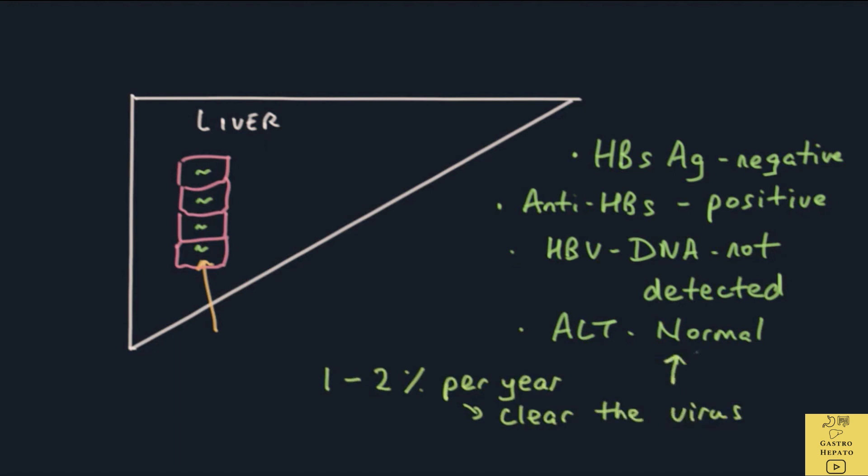Even in this phase, the virus in the liver can sometimes become active. This can occur in patients who are taking drugs that suppress the immune system like steroids or anti-cancer drugs.